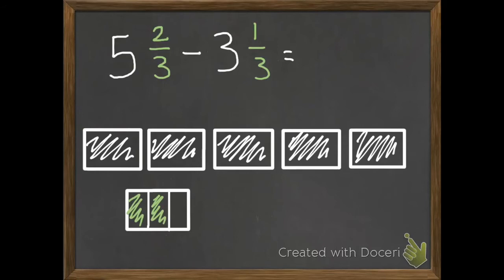Now that we have that, we need to subtract 3 holes and 1 third. So go ahead and cross out 3 of your holes. 1, 2, 3. And then we need to subtract our 1 third. So cross out 1 of your thirds. So what is the difference? What do we have left?